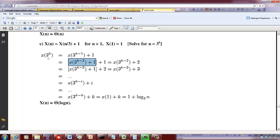Okay, then this +1 comes over here, so this is now X(3^(k-2)) + 2. So now using the same recurrence,